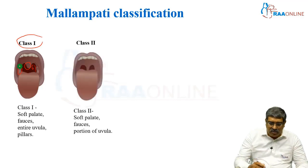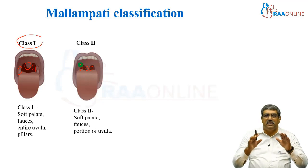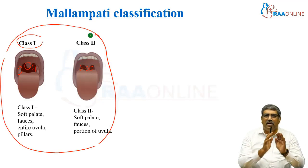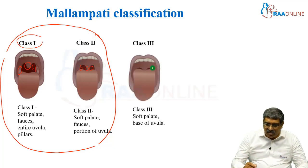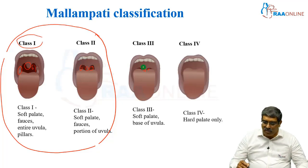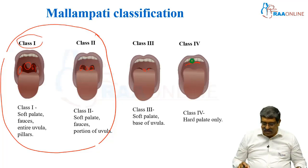In class 2, you can see the soft palate, you can see a portion of the uvula as well as the fauces. Everything can be seen in class 2 — up to class 1 and class 2 you are a little bit safe. In class 3, you can see a little bit of soft palate and only the base of the uvula. And in class 4, only the hard palate is seen — nothing else is seen.